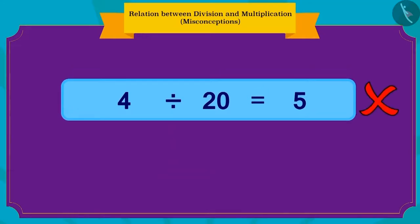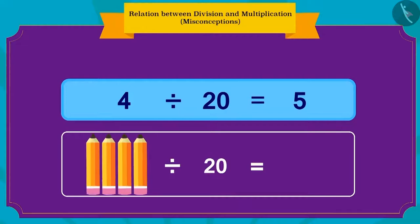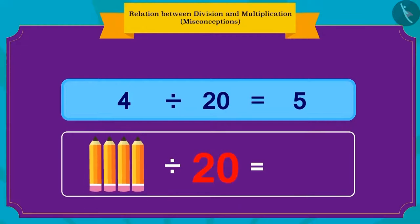No, what Raju has written is wrong. But why is it wrong? Because here Raju is dividing four pencils in 20 rupees, and is this even possible? Not at all. This is not possible.